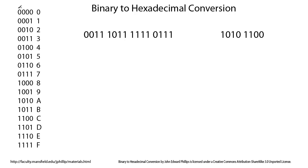And finally, this last column is called the eights column in binary. Count with eight zeros and then eight ones. Doing that, you can very quickly create this table.